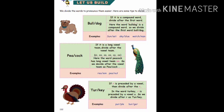Now let's recall all three patterns we learnt today. Bulldog pattern: if it is a compound word, we have to divide the word after the first word. Second, peacock pattern: when we get a word with a long vowel team, we have to divide after the vowel team.